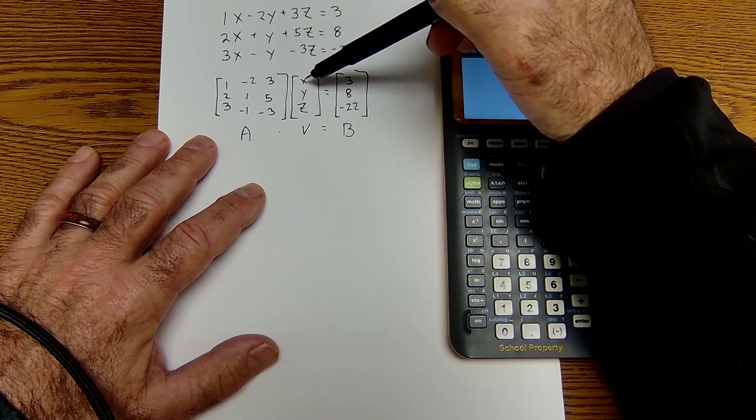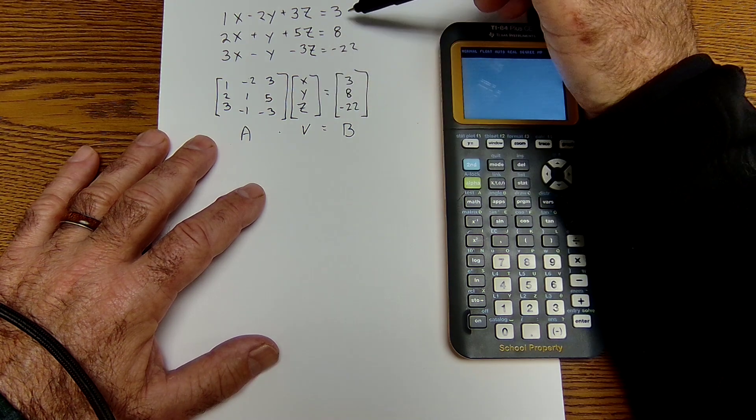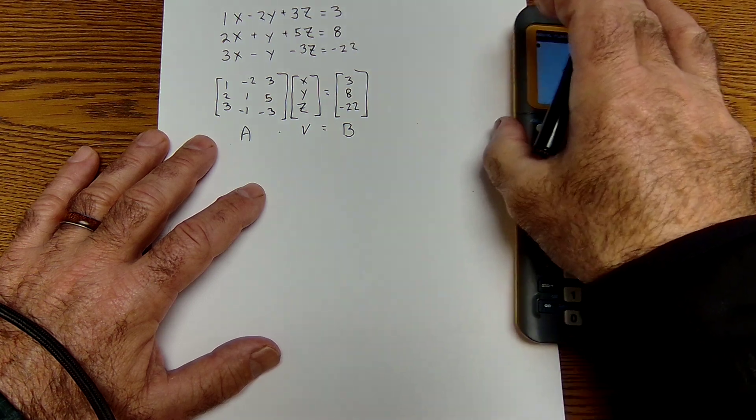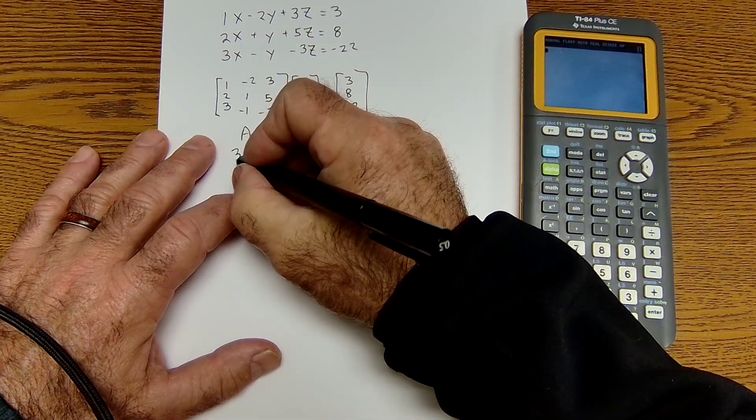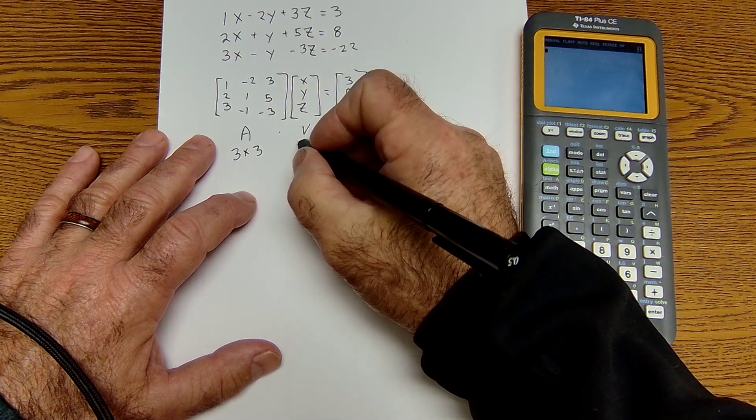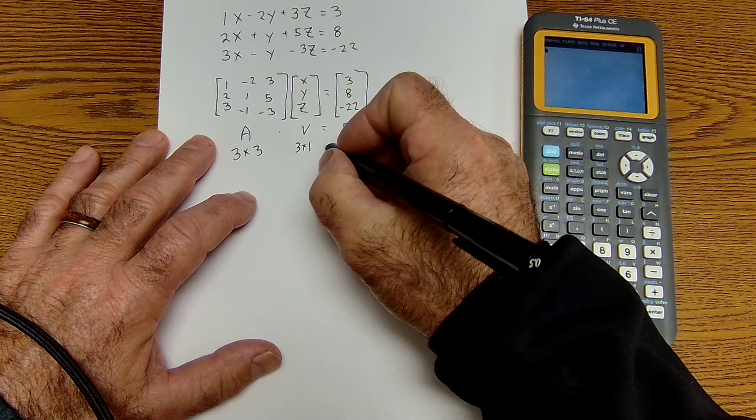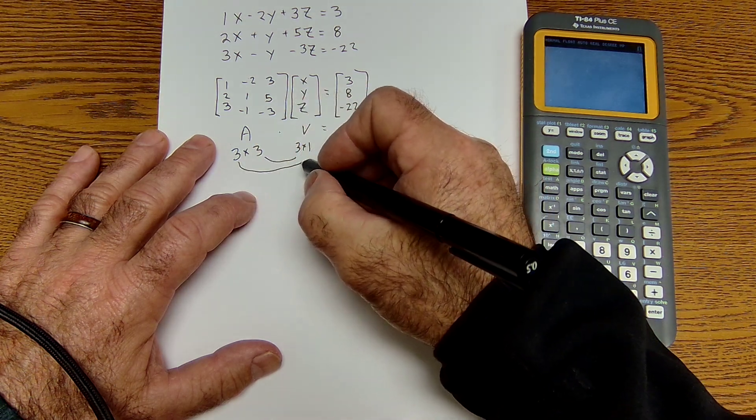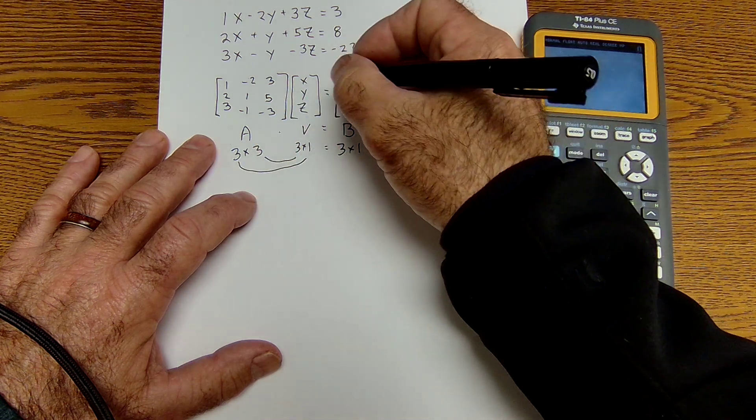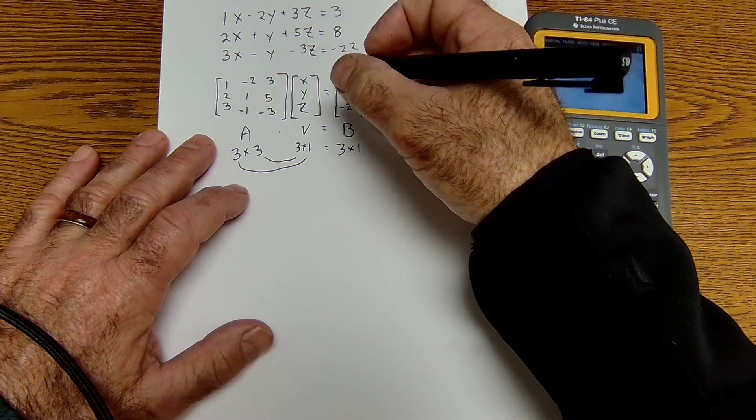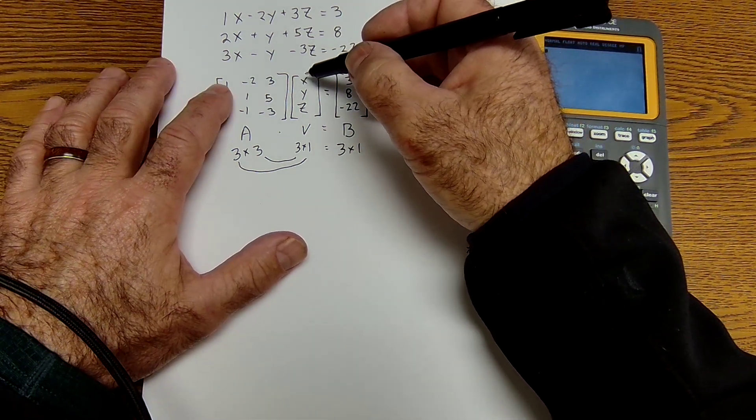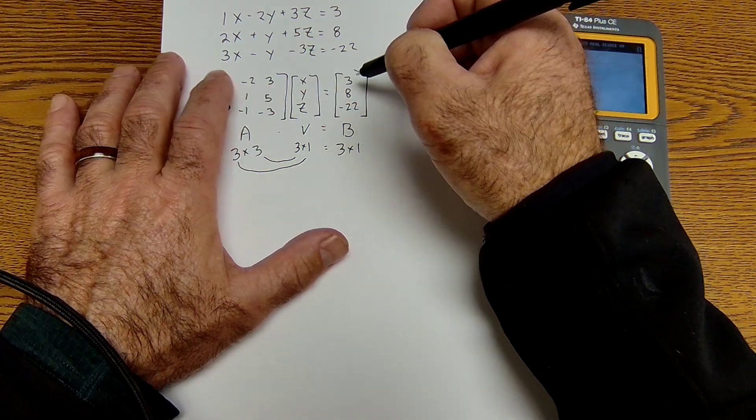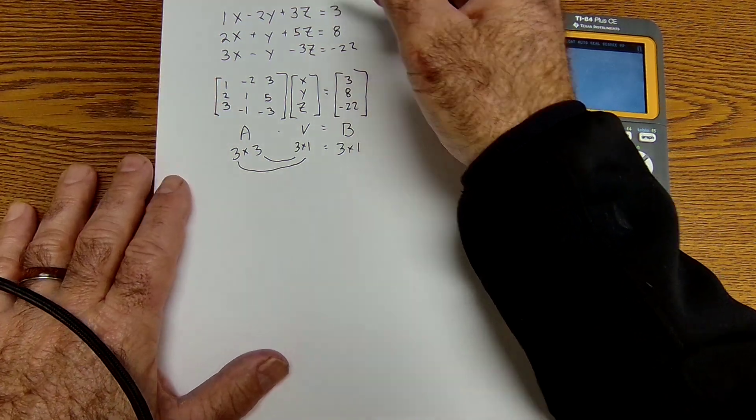x, y, z, equal to a solution matrix 3, 8, negative 22. And again, here I have a 3 by 3 times a 3 by 1. So yes, I can multiply and my result will be these dimensions here, a 3 by 1, 3 rows, 1 column. And I can see as I multiply these together, I'd have 1x minus 2y plus 3z would equal 3, and the same as that equation there.